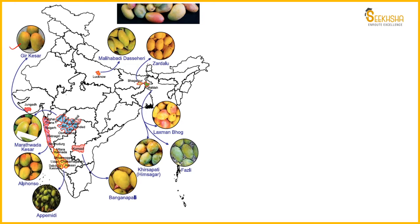Then we have the next variety called Zardalu. Zardalu belongs to the state of Bihar. Then we have Lakshman Bhog, which belongs to West Bengal - especially Malda, which is a very rich district when we talk about mango production.